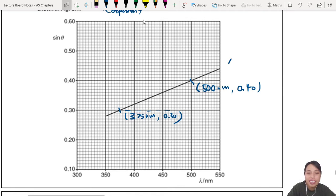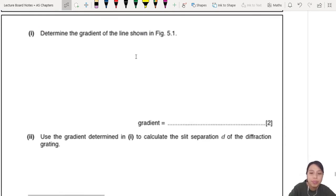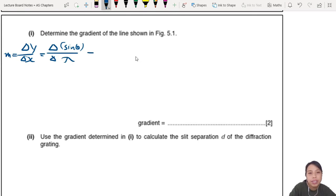Gradient triangle - you should do this in lab many times, you should know how to do already. So gradient is Δy/Δx, also we call gradient m by the way by now. This will be Δ sin θ over Δλ because that's our x-axis.